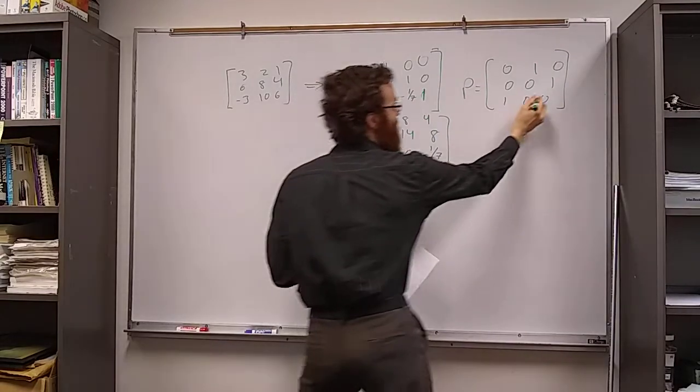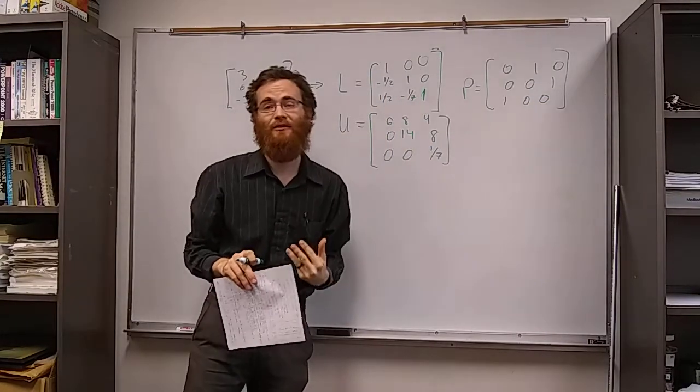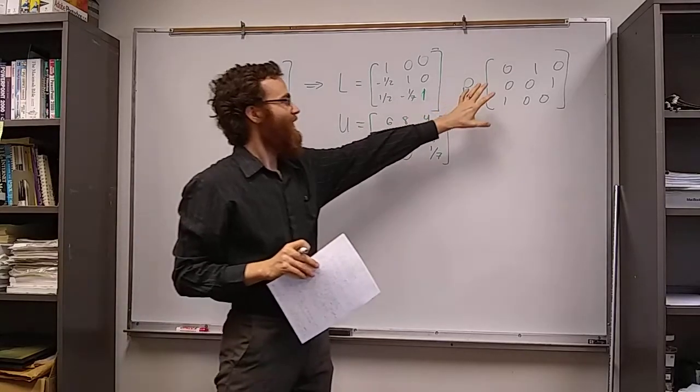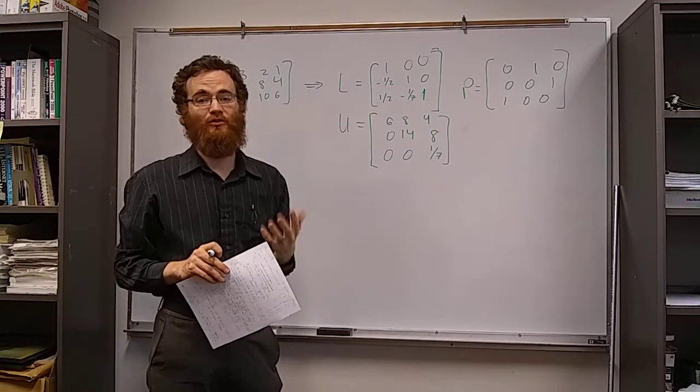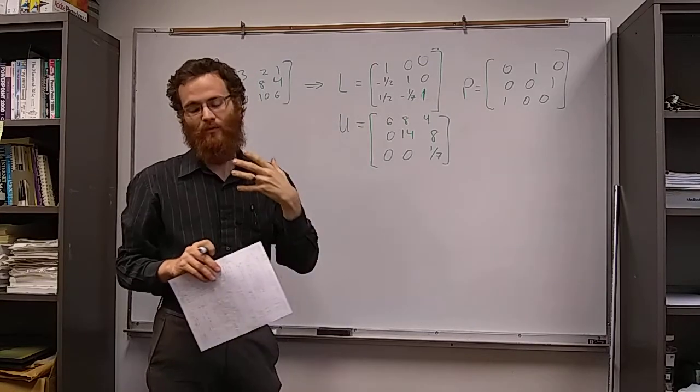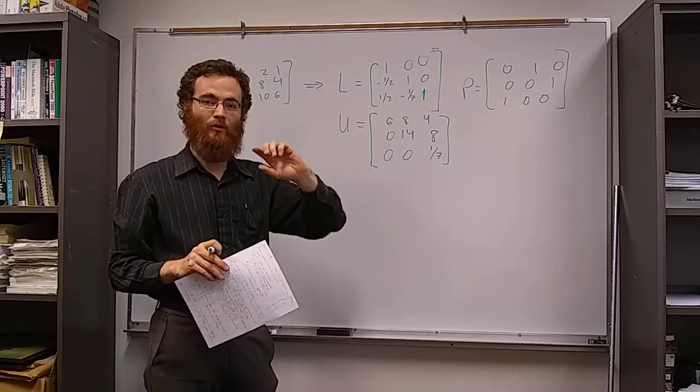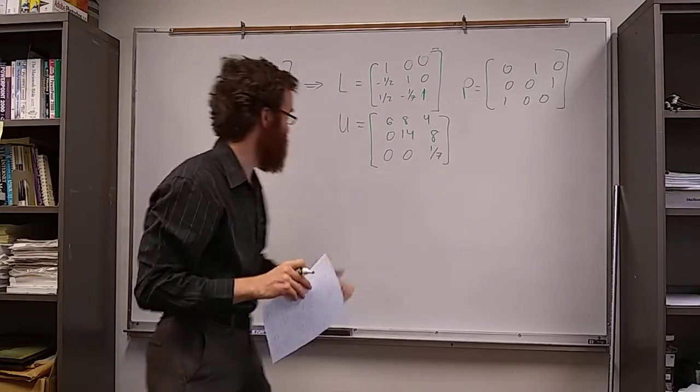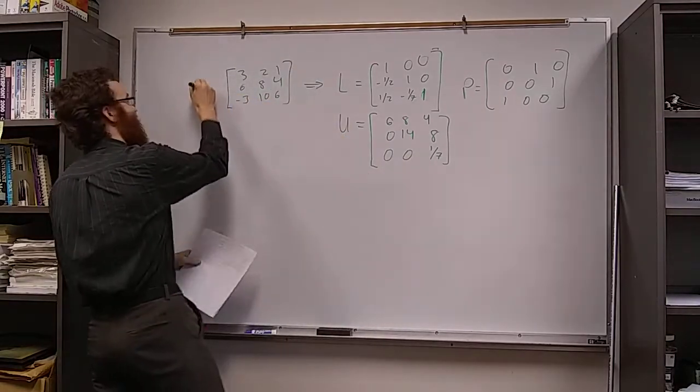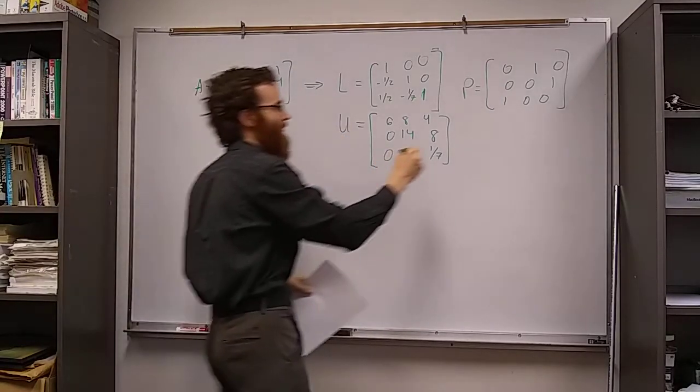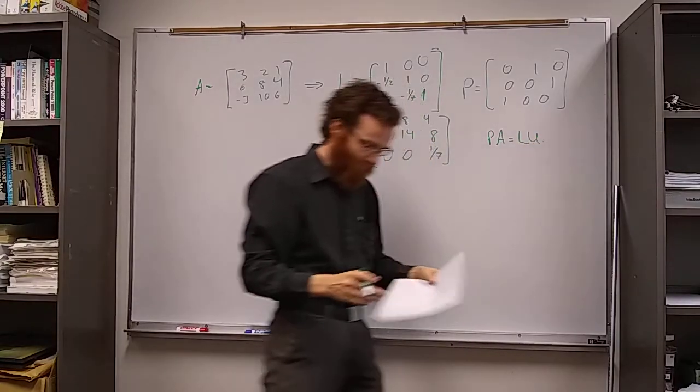This represents when we did the Gaussian elimination to find the LU decomposition. P represents the row exchanges we had to do in order to do partial pivoting, so that's where we put the largest available number in the pivot position. Using these, if this matrix is A, we have PA equals LU.